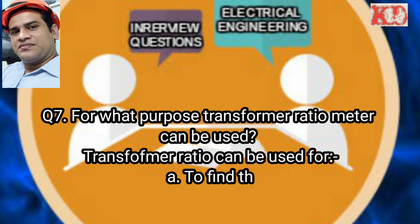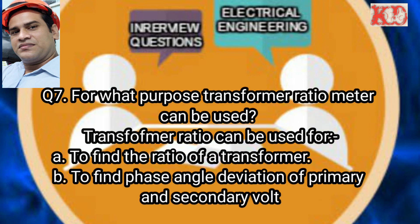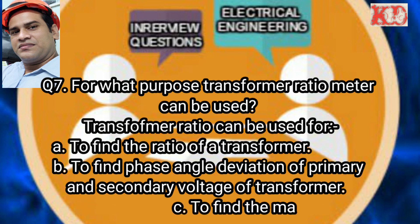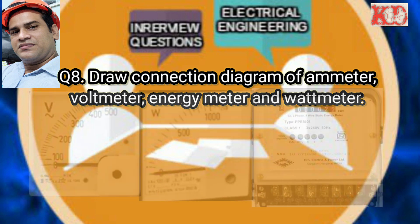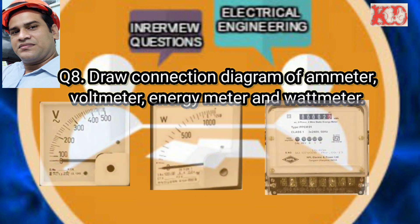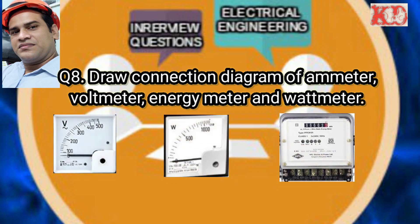For what purpose can transformer ratio meters be used? Answer: Transformer ratio meters can be used for: first, to find the ratio of a transformer; second, to find the phase angle deviation of primary and secondary voltage of a transformer; third, to find the magnitude of magnetizing currents.